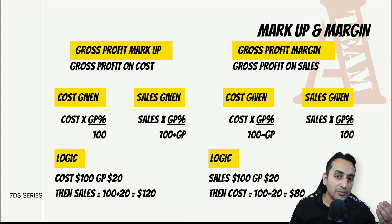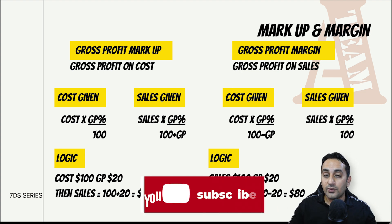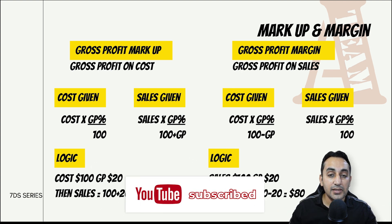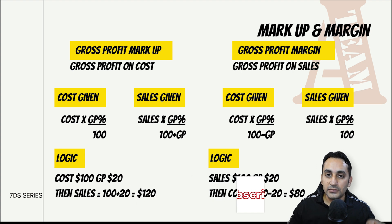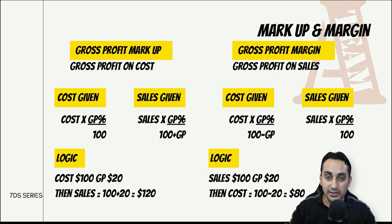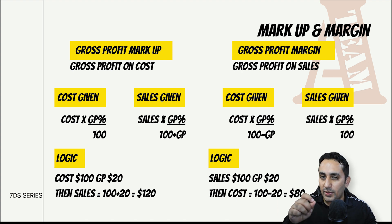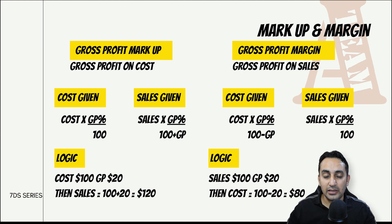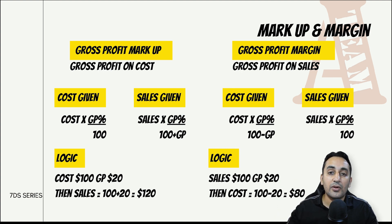अगर question में cost दे रखा है तो cost के equivalent amount से divide करेंगे, sales दे रखा है तो sales के equivalent amount से। वैसे अगर margin दे रखा है तो भी cost और sales का equivalent amount निकालना होगा, लेकिन margin के case में शुरुआत sales से करेंगे - sales को 100 मानेंगे। Gross profit 20% है तो $20, और cost = sales - gross profit = $80 निकल जाएगा।